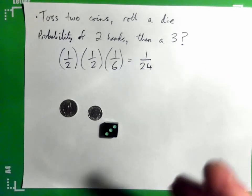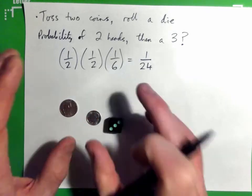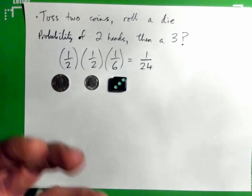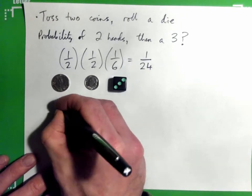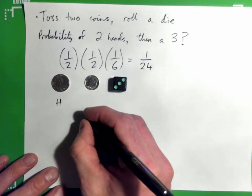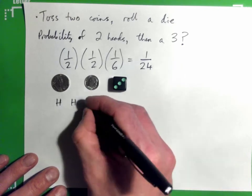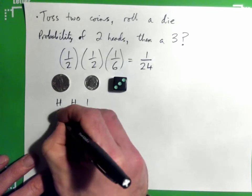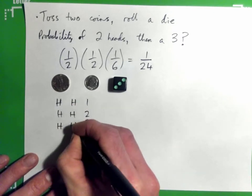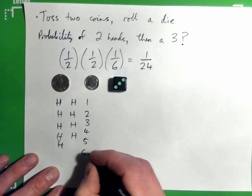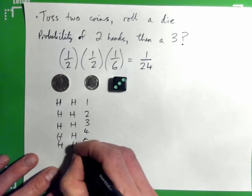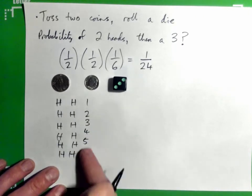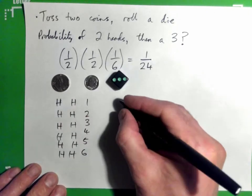As a math teacher I want to explain why — there are actually 24 possible things that could happen. You could get heads on the first coin and heads on the second, and then roll a one, two, three, four, five, or six. So outcomes include head-head-one, head-head-two, head-head-three, head-head-four, and so on.